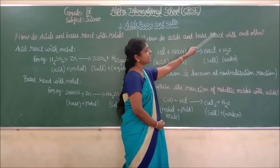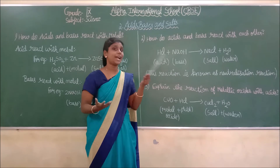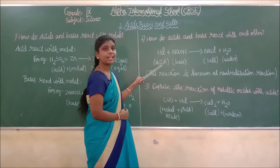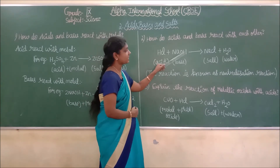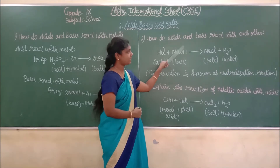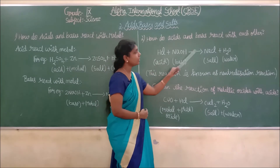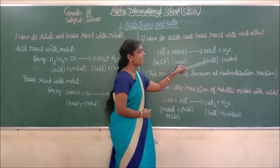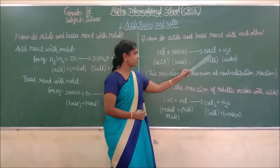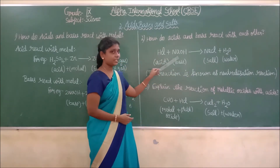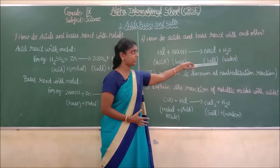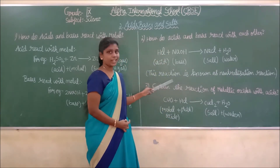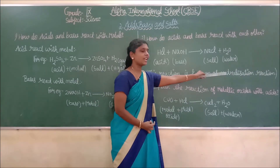How do acids and bases react with each other? HCl is the acid. When acid and base combine together — the base has OH present — they give salt and water. This reaction of acid and base combining to give salt and water is called a neutralization reaction.